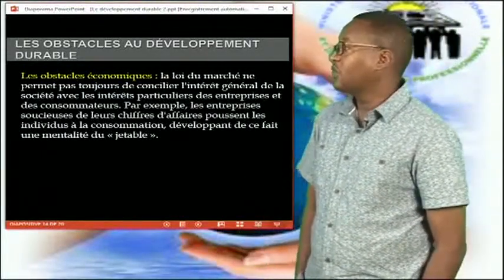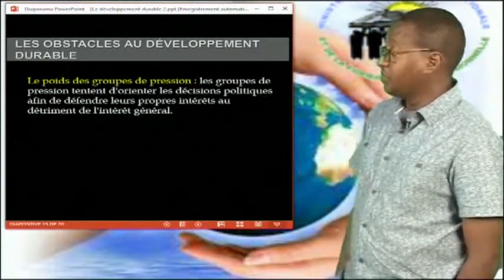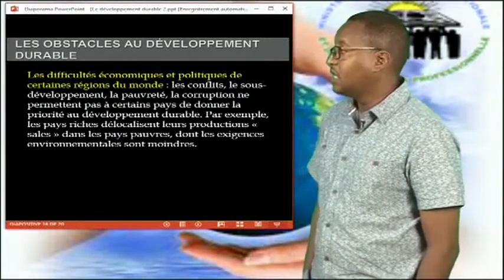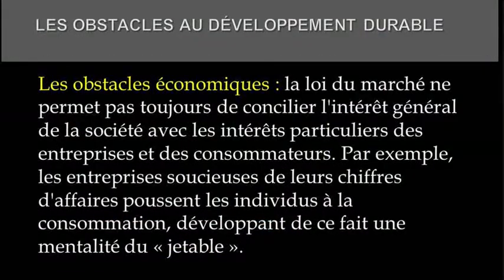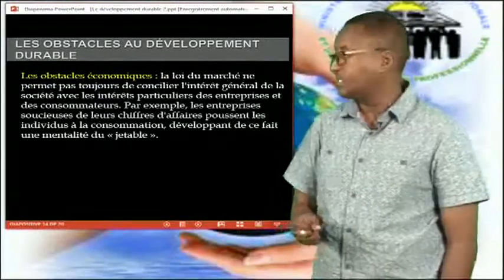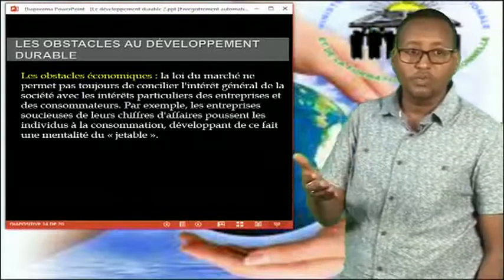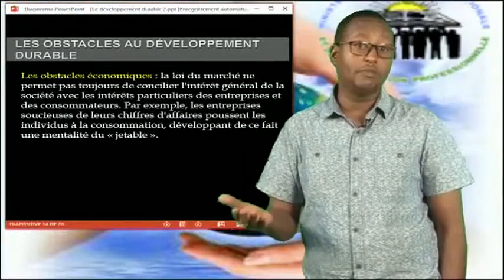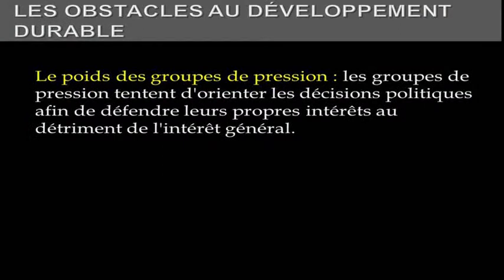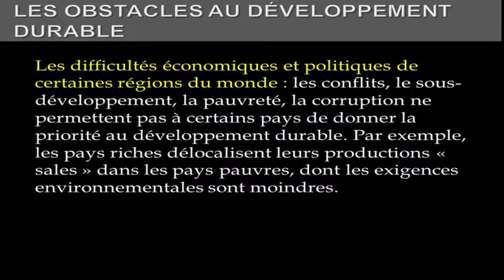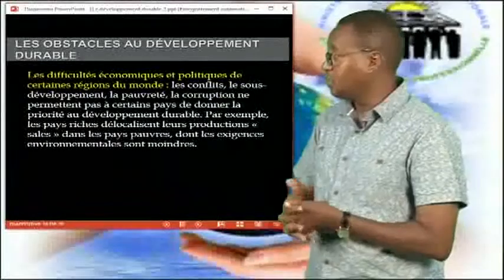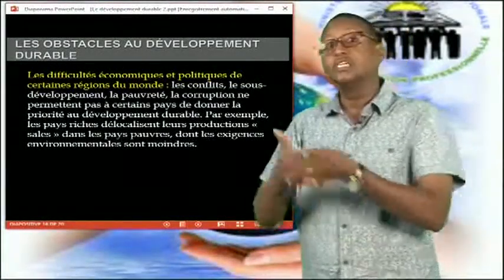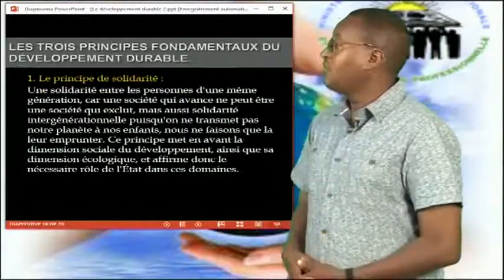Nous verrons par la suite les obstacles au développement durable. Il y a les obstacles économiques, le poids des groupes de pression et les difficultés économiques et politiques de certaines régions du monde. Les obstacles économiques supposent une loi du marché qui ne permet pas toujours de concilier l'intérêt général et les intérêts privés des entreprises. Les groupes de pression tentent d'orienter les décisions politiques afin de défendre leurs propres intérêts au détriment de l'intérêt général. Les difficultés économiques et politiques — comme le conflit, le sous-développement, la pauvreté ainsi que la corruption — constituent un obstacle à l'avancée du développement durable.